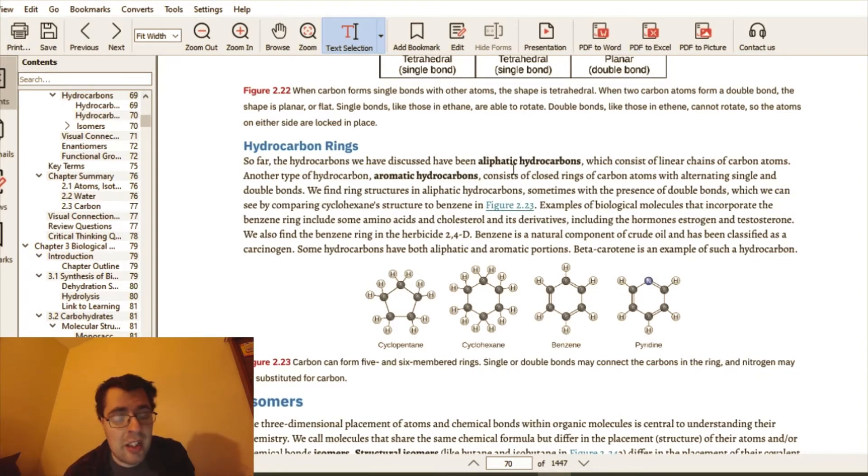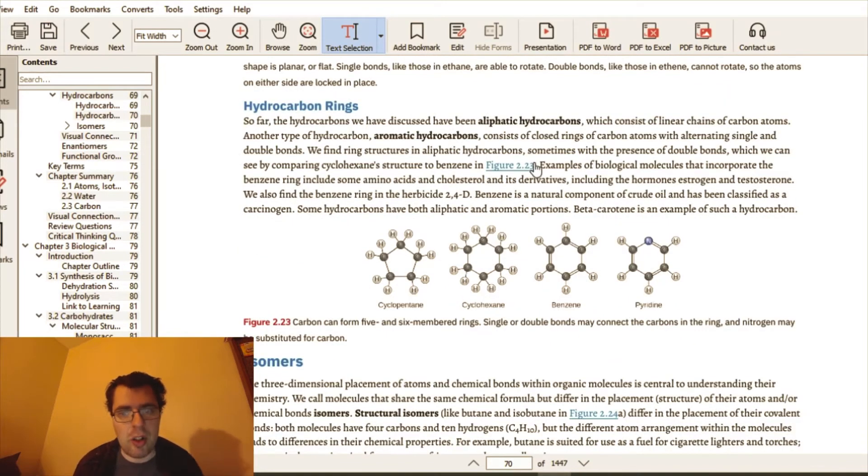Now, hydrocarbon rings are very much used in biology and nutrition. So far, the hydrocarbons we have discussed have been aliphatic hydrocarbons, which consist of linear chains of carbon atoms. Another type of hydrocarbon is the aromatic hydrocarbons, which consist of closed rings of carbon atoms with alternating single and double bonds. I believe we'll go over both of these in more detail in the future chapter.